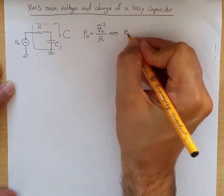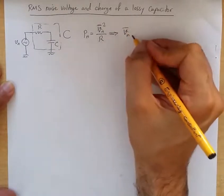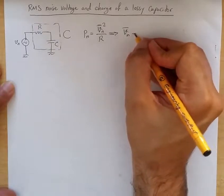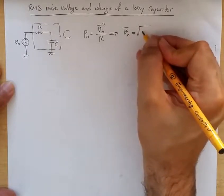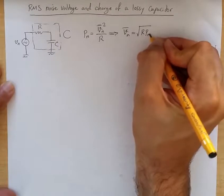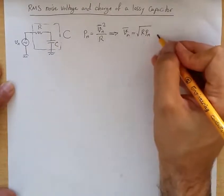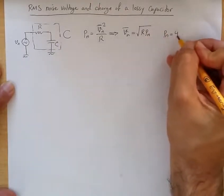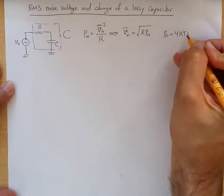From here we understand that VN bar, which is the RMS value of the noise voltage, is equal to the square root of R PN. We know PN is 4KTB.